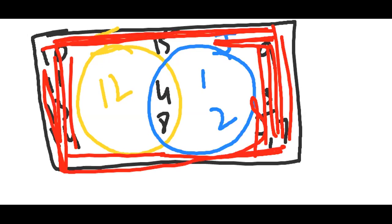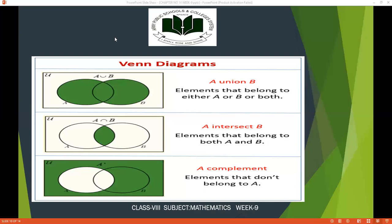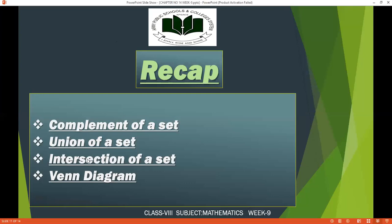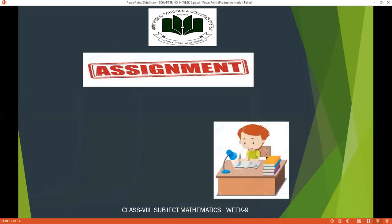The second part is I intersection J complement. Using the same criteria, find it from the Venn diagram. If you have any problems, ask in your assignment and I will explain again. For the recap: today we covered complement of a set, union of a set, intersection of a set, and we drew Venn diagrams combining all three operations.